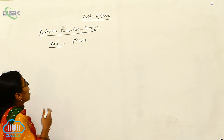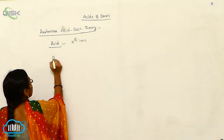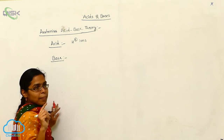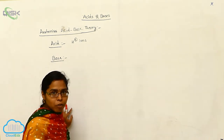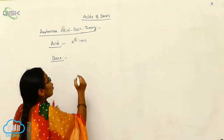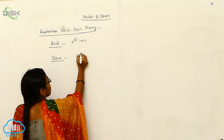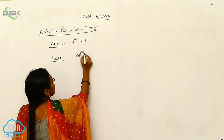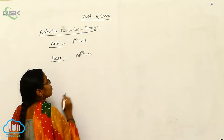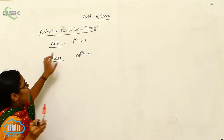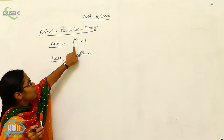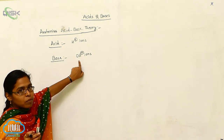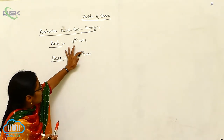The second part is the Arrhenius base. The compounds which on dissolving in water give OH⁻ ions — that is, hydroxide ions — are called Arrhenius bases. So: dissolving in water giving H⁺ ions → acids; dissolving in water giving OH⁻ ions → bases.